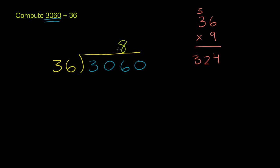So let's try this out and just make sure. 8 times 6 is 48. Put the 8 there, carry the 4. 8 times 3 is 24, plus 4 is 28. So 8 times 36 is 288, and it fits. It's less than 306. 9 would have been too much. It would have been greater than 306.